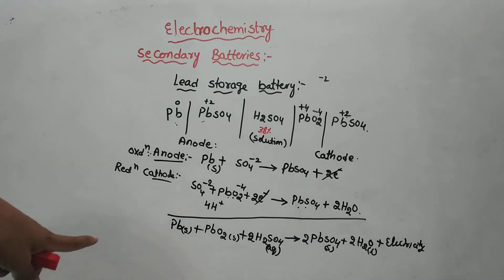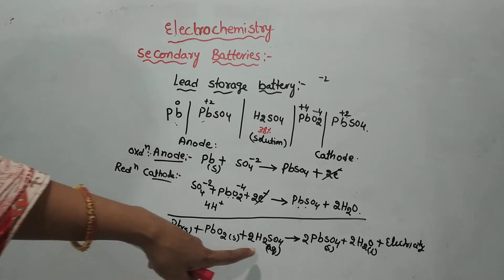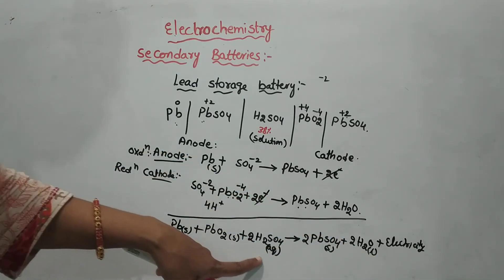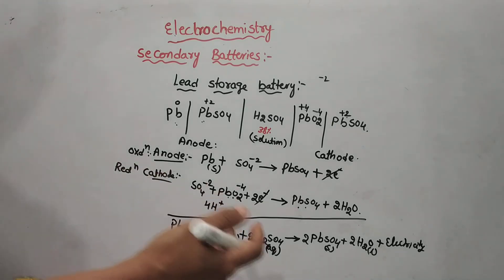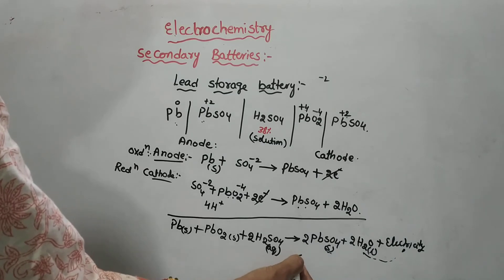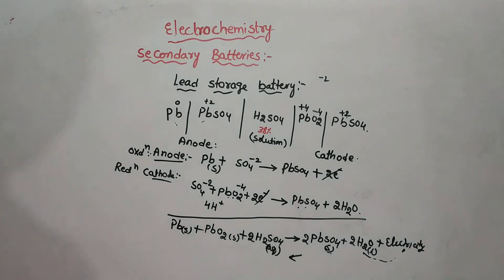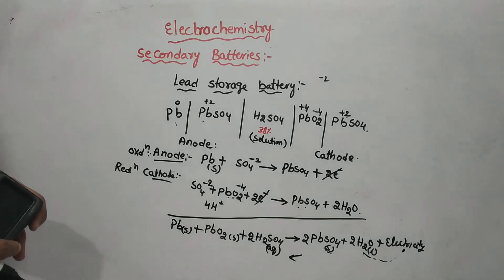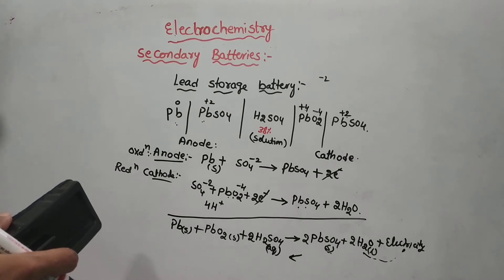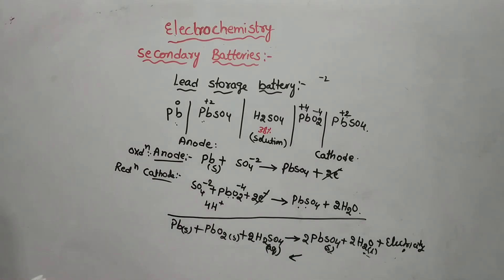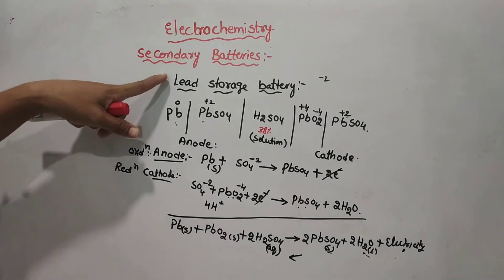Overall, the reaction gives lead sulfate, lead oxide, and H2SO4 combining to give lead sulfate and water, generating electricity. When we recharge the battery, we supply electricity and the reverse reaction occurs — water and lead sulfate are converted back to lead, PbO2, and H2SO4. This reversible reaction is what makes it a rechargeable secondary battery, used in inverters and automobiles.